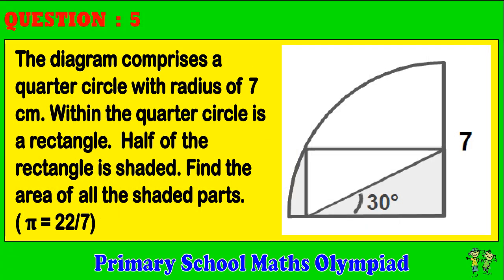Question 5. The diagram comprises a quarter circle with a radius of 7 cm. Within the quarter circle is a rectangle. Half of the rectangle is shaded. Find the area of all the shaded parts. Pi equals 22 over 7.